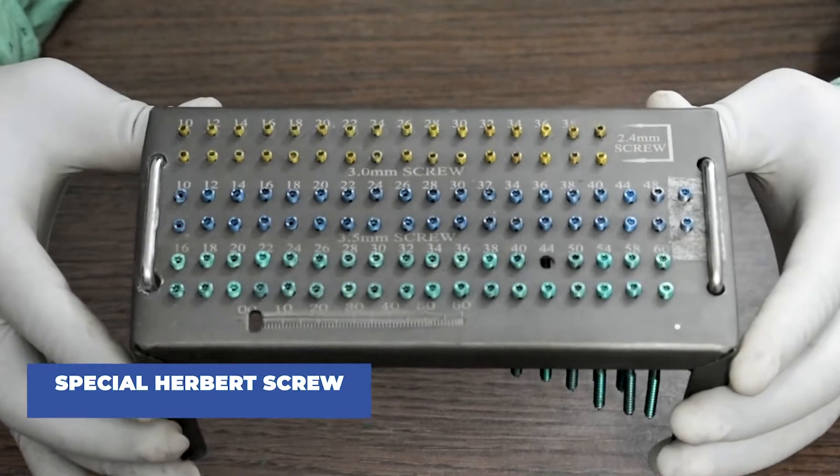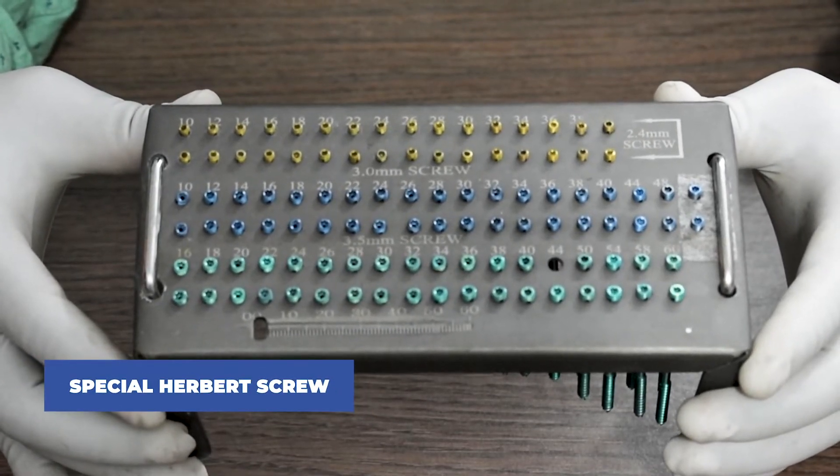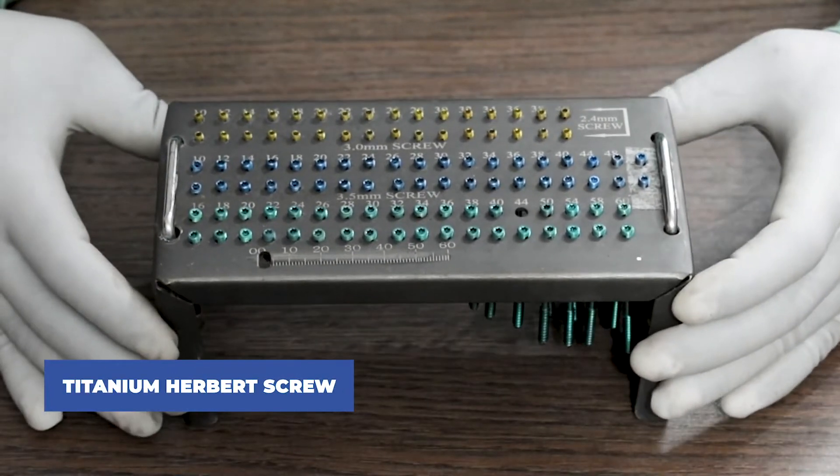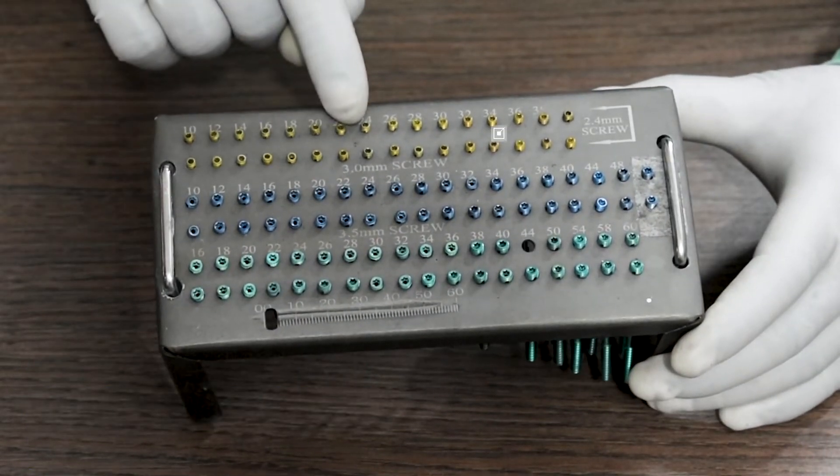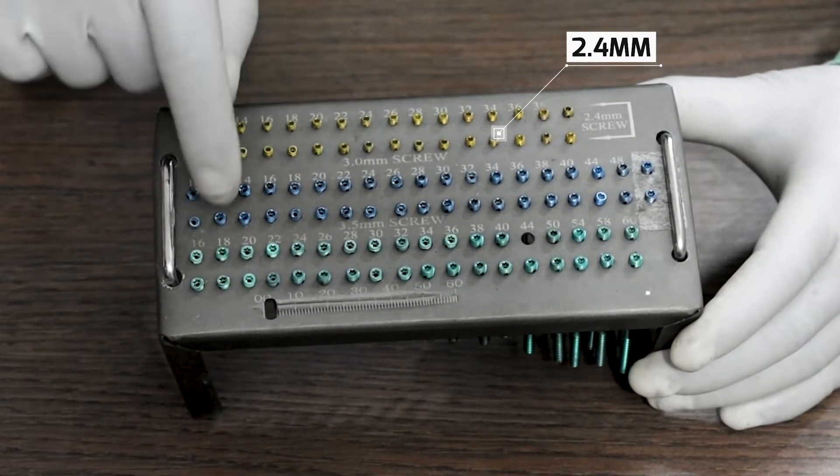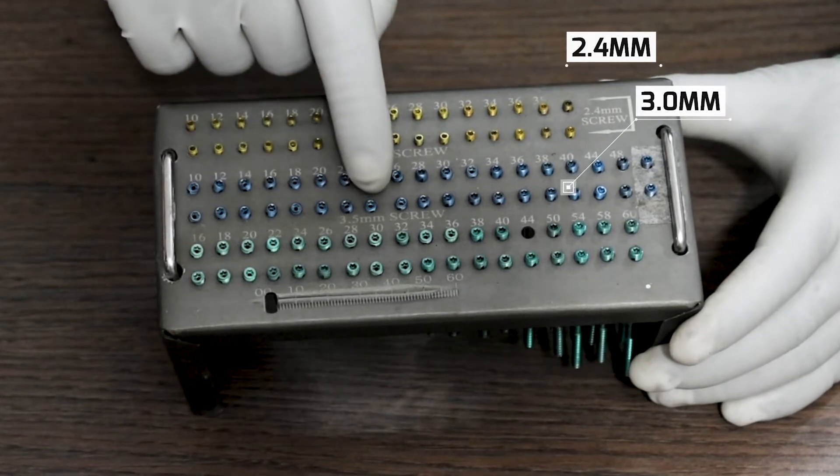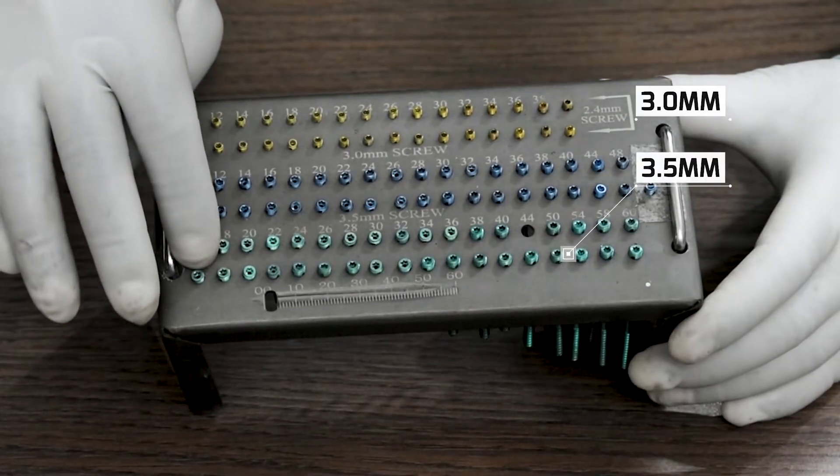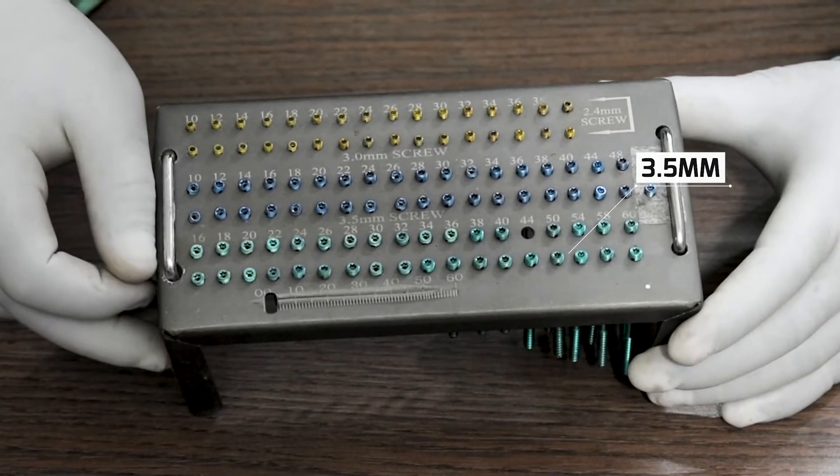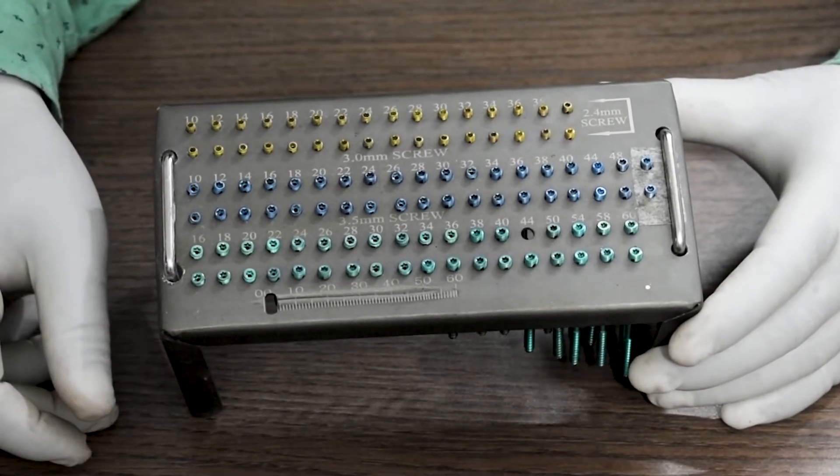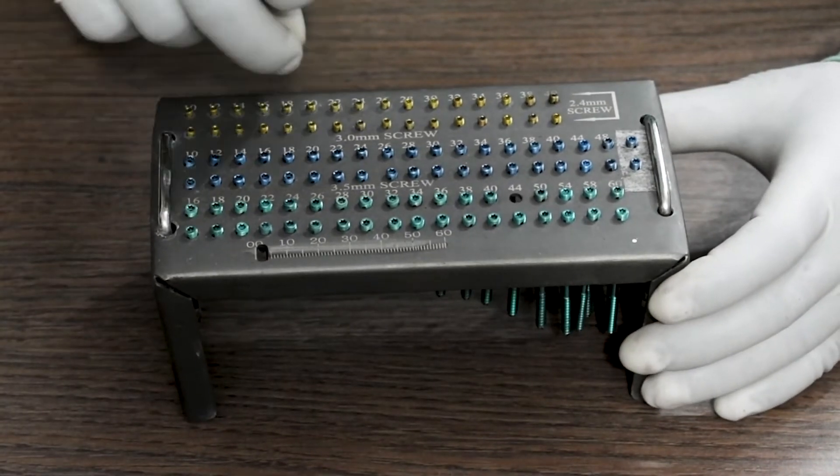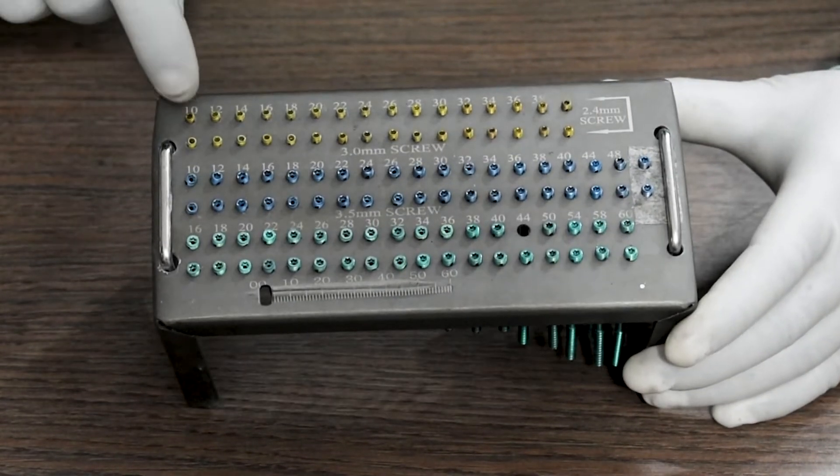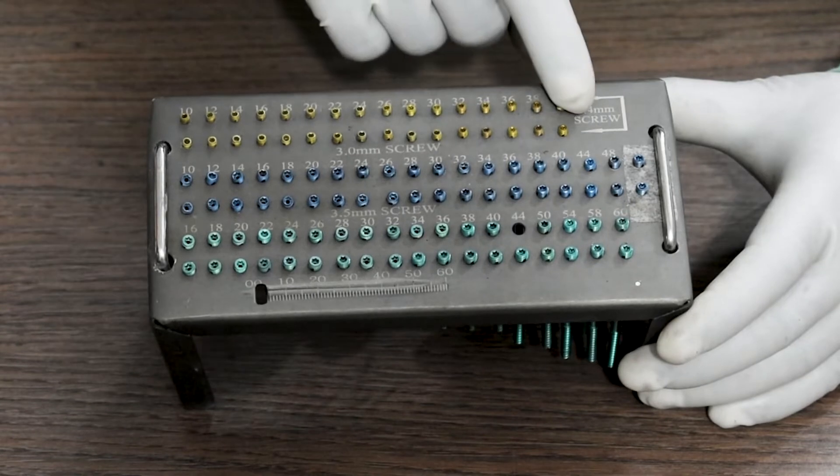This is the Special Herbert Screw. It comes in three sizes. To start with, it is available in 2.4mm diameter, then 3mm and 3.5mm. For 2.4mm, available lengths are from 10mm to 40mm, two pieces each.